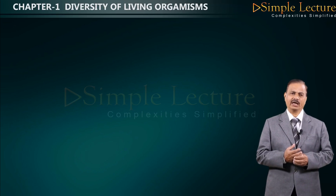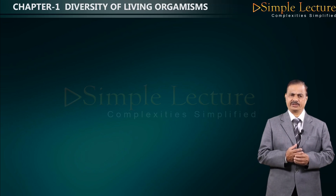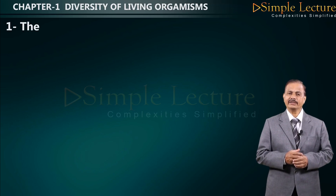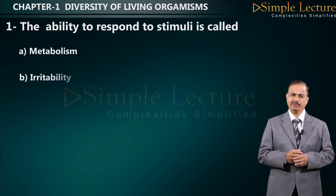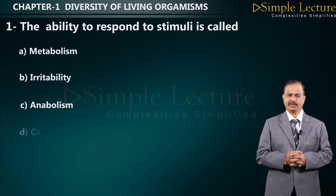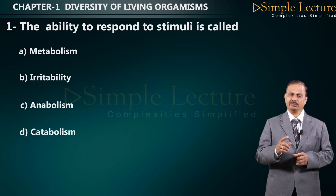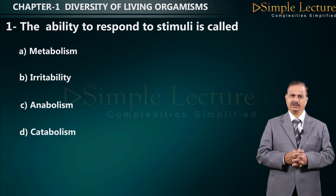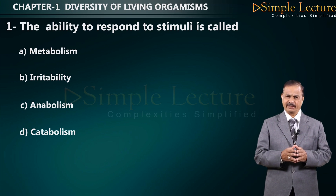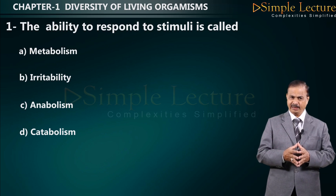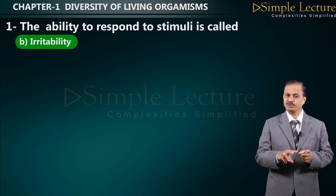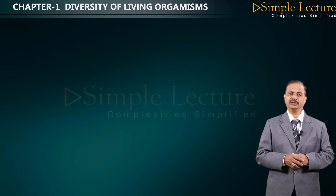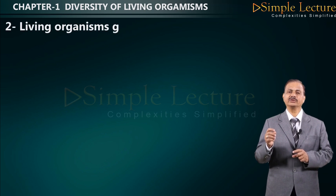Chapter 1: Diversity of Living Organisms. Question number one: the ability to respond to stimuli is called — options are A: metabolism, B: irritability, C: anabolism, D: catabolism. Anabolism and catabolism are types of metabolism involving breakdown or synthesis of complex material. The correct option is B: irritability, which is the product of the reaction between stimuli and response.